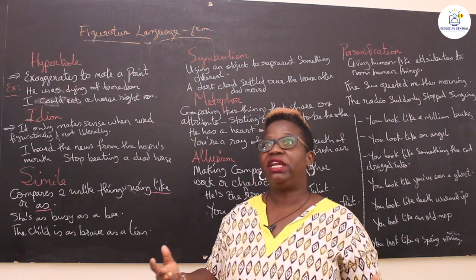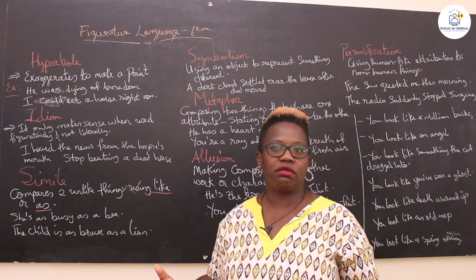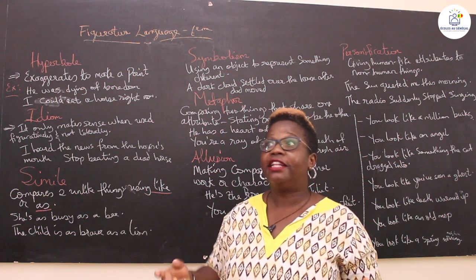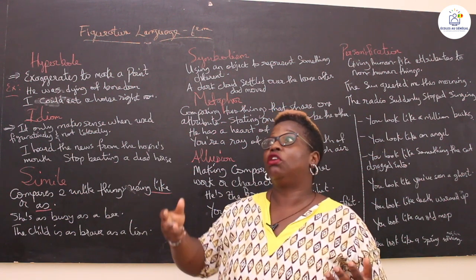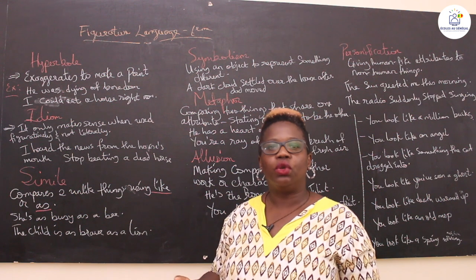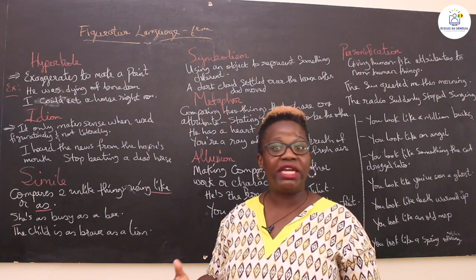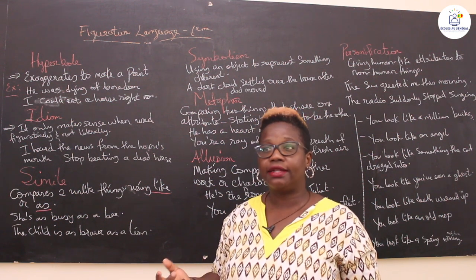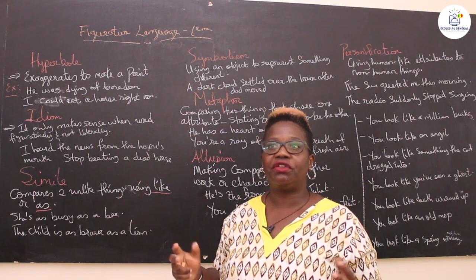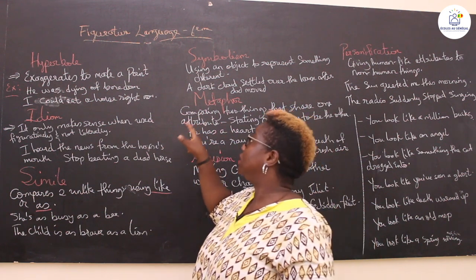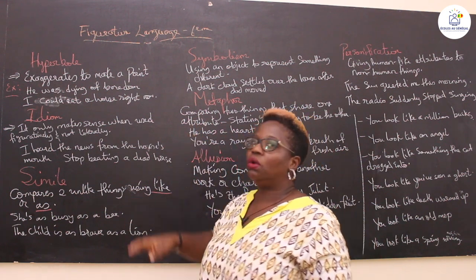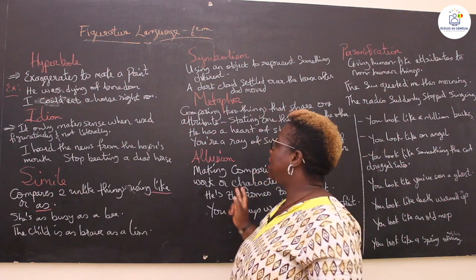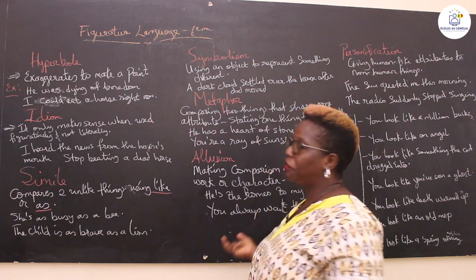For example, 'it's raining cats and dogs.' That right there tells you that cats and dogs are not actually falling, but that it's raining heavily. And so we're going to look at some of the different types — there are actually nine figurative languages, but today we're going to be looking at seven of them.